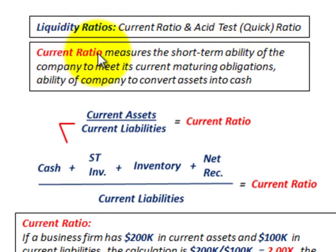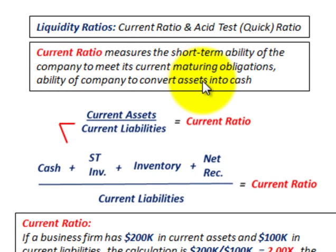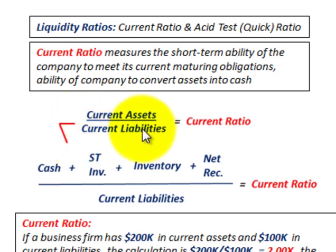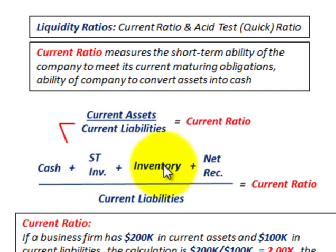Starting with our current ratio, that measures the short-term ability of a company to meet its current maturing obligations — the ability of the company to convert its assets into cash. Our equation for the current ratio is current assets divided by current liabilities. Current assets would include cash, short-term investments, inventory, and net receivables.